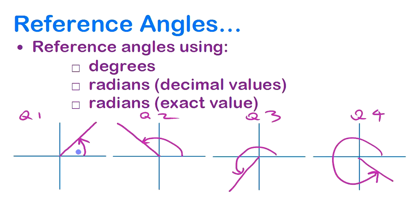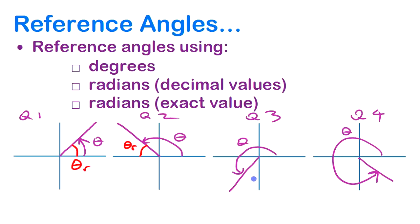In quadrant one, the reference angle is just that angle itself — that's theta reference. In quadrant two, the reference angle is this part in here — it's the extra bit to get you to 180 degrees or pi radians. Quadrant three is the one people have trouble with sometimes because they think it's the big angle in here — it's not. It's the small one going backwards, but the reference angle is always positive. In quadrant four, it's that small angle over there.